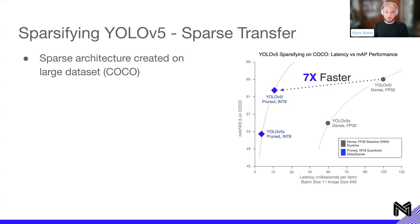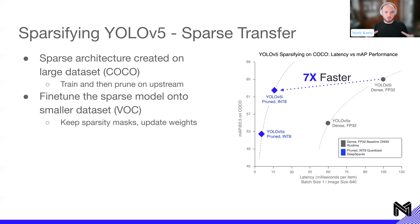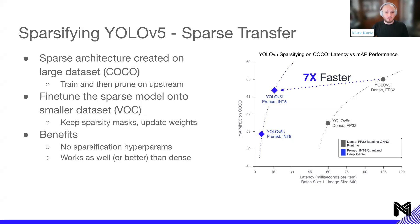Once we have that COCO model, we can fine-tune that sparse architecture onto a smaller dataset or any other dataset you might need — something like VOC or your own personal dataset. Specifically, we keep the sparsity mask intact — that sparse architecture developed on the large upstream dataset stays intact, and we just update the weights that aren't sparse. The benefit is we don't need to do any sparsification hyperparameter tuning; we can just substitute this sparse architecture for our standard dense training. It works as well or better than dense — we have papers out in CVPR and NeurIPS showing sparse transfer works just as well and in some cases better, especially for generalization.